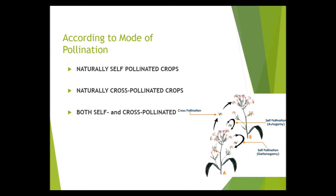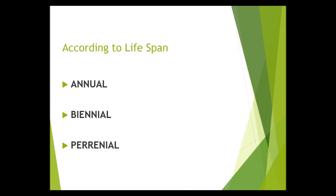Next is classification according to lifespan. Annual crops live for a short period of time — around a few weeks to four months only — and die after they produce a seed. Examples of annual crops are rice and corn.